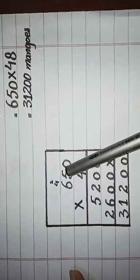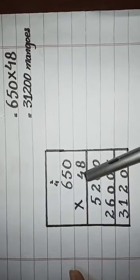4×5 is 20, you will write 0 here, carry 2. 4×6 is 24, and 24 plus 2 is 26.